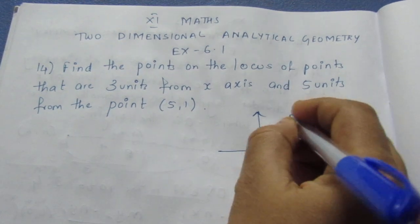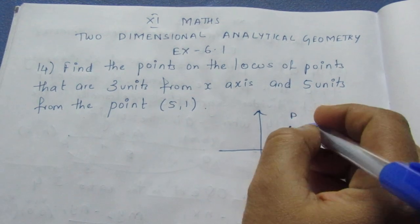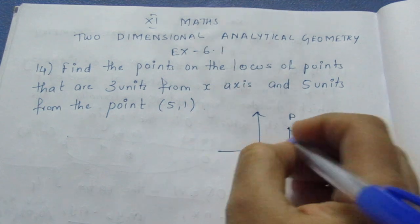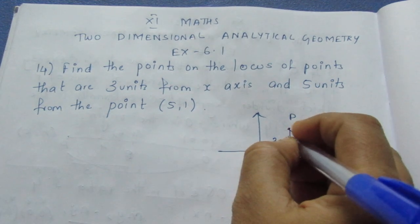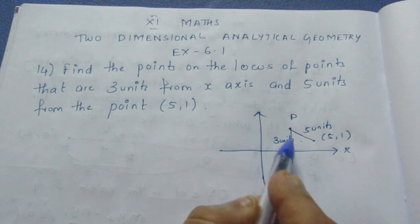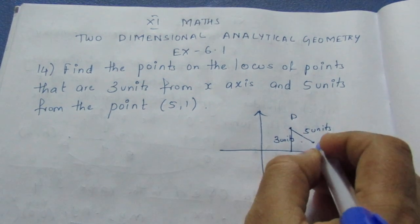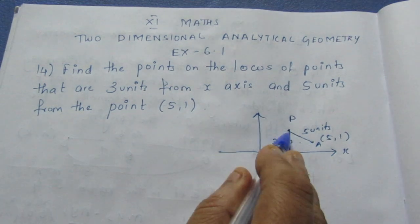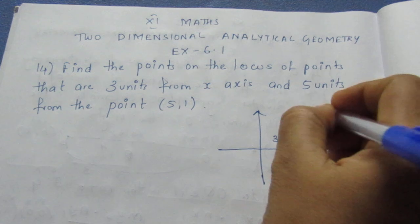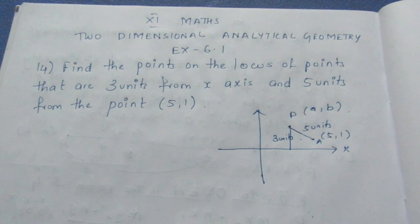Now, this is P. If you look at this, this is total 5 units. This is the 3 units. There is 3 on the x-axis. If you look at this point, we can write this A. At this point, there are 5 units. This P. A, B. Let's write here.